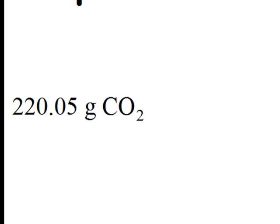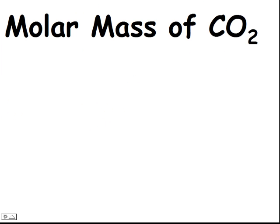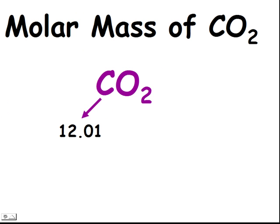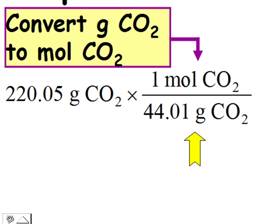We start by writing 220.05 grams of CO2. We need to convert grams of CO2 to moles of CO2, so we need the molar mass of CO2, which we calculate by adding the atomic mass of carbon (12.01) and 2 times the atomic mass of oxygen (16.00), giving a total of 44.01 grams per mole. We multiply the grams of CO2 by the conversion factor 1 mole of CO2 over 44.01 grams of CO2. The unit grams of CO2 cancels, leaving us with moles of CO2.